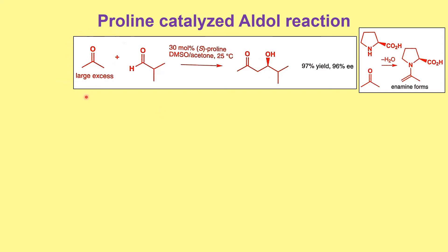In this example, acetone and an aldehyde are used with proline as a catalyst — only 30 mole percent — and DMSO as the medium, giving us the beta-hydroxy ketone in very high enantioselectivity as well as high ee. The first step of the reaction is the formation of the enamine species. Since the ketone is taken in large excess, we drive the reaction forward so the ketone forms the enamine. This aldehyde is quite hindered, so enamine formation with acetone is much more preferred.